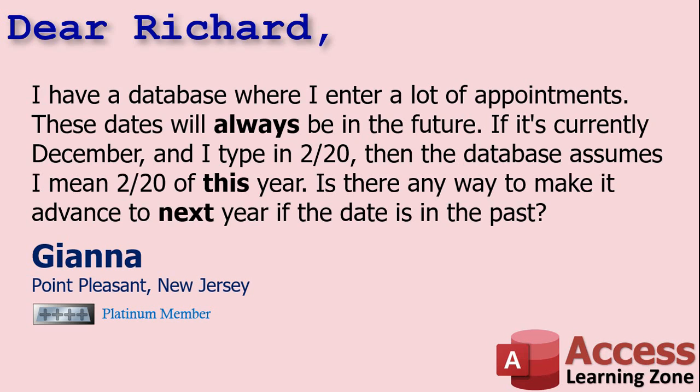Today's question comes from Jonna in Point Pleasant, New Jersey, one of my Platinum members. She says: I have a database where I enter lots of appointments. These dates will always be in the future. If it's currently December and I type in 2/20 — February 20th — then the database assumes I mean 2/20 of this year. Is there any way to make it advance to the next year if the date is in the past?